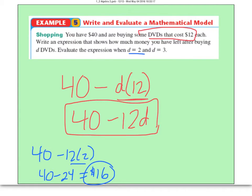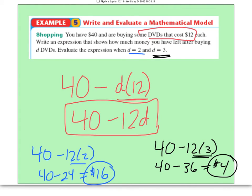What if we bought three DVDs? Well, 40 minus 12 times 3. PEMDAS would say multiply first. So 40 minus 12 times 3 is 36. If we subtract, we now have $4 left in our pocket.